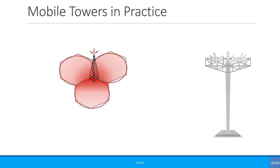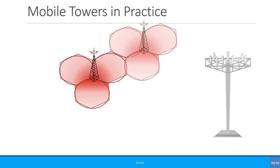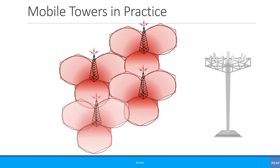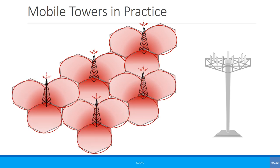In practice, most mobile towers or the big macro cells are three-sector cells. You would have a tower with three cells, and when you have multiple of these, you can think of them becoming something like hexagons.